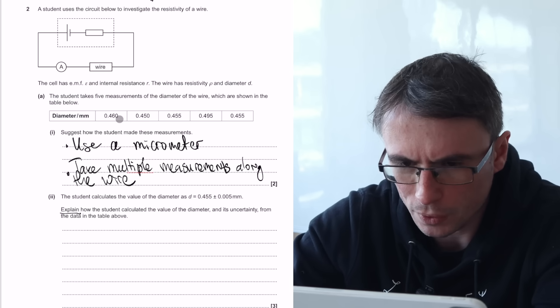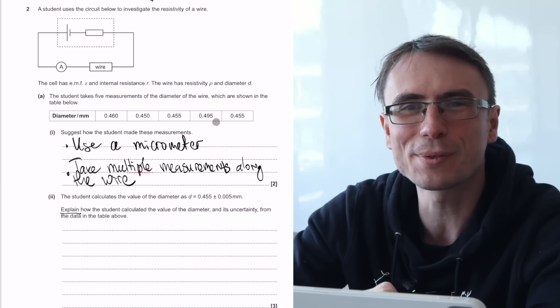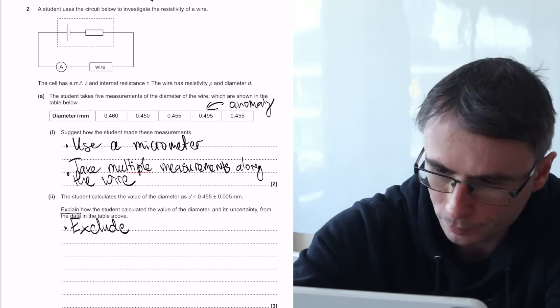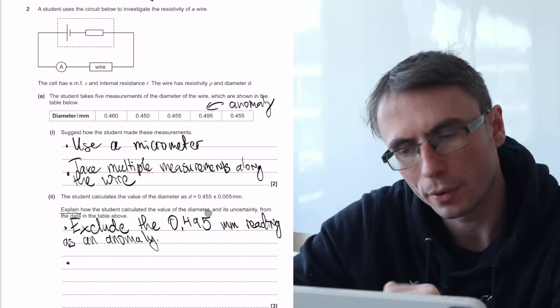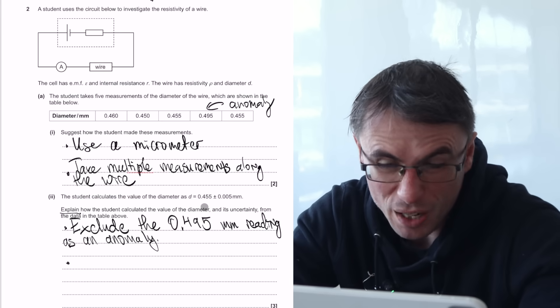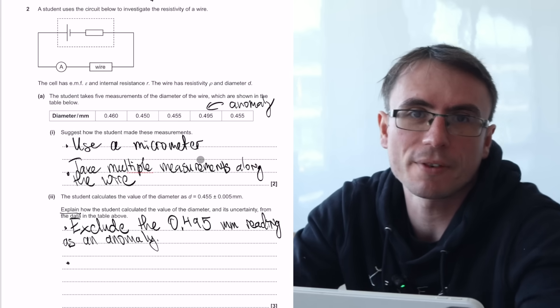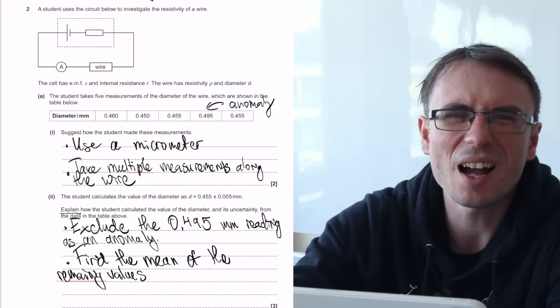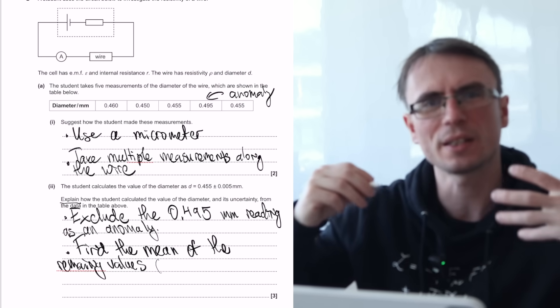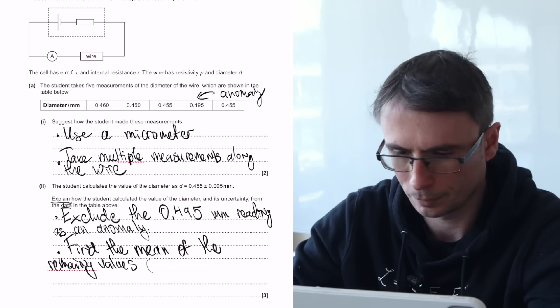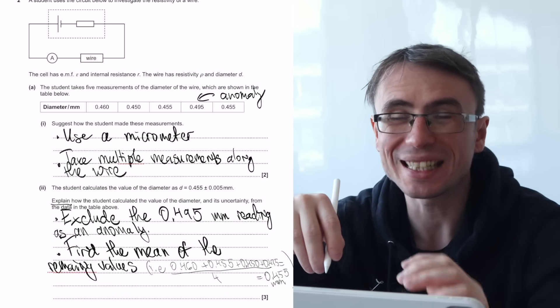So let's see, we have 0.460, 0.450, 455. Aha, we have spotted an anomaly. So we need to explain how to calculate a couple of things. Number one is this value of 0.455. Well, this will simply be the mean of the remaining values. And if I have a little bit more time left, I might even just showcase that this is the case.